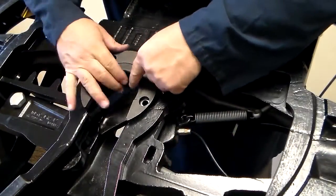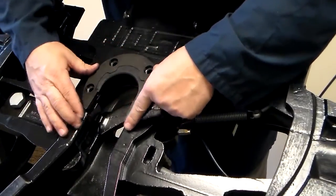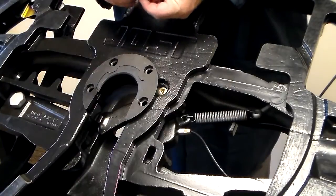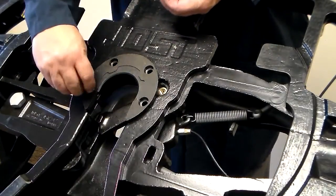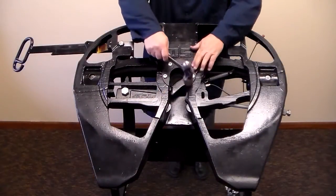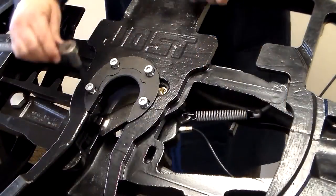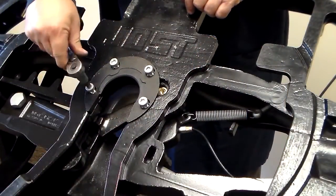Now install the cushion ring and retainer. Carefully line up the bolt holes and then install four new cushion ring bolts. Tighten and torque the bolts to 45 foot-pounds.